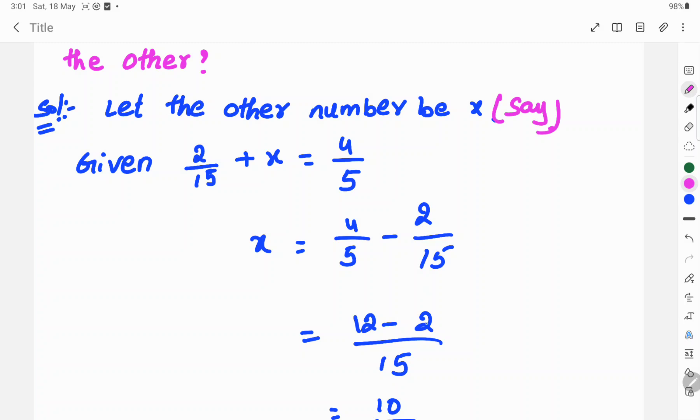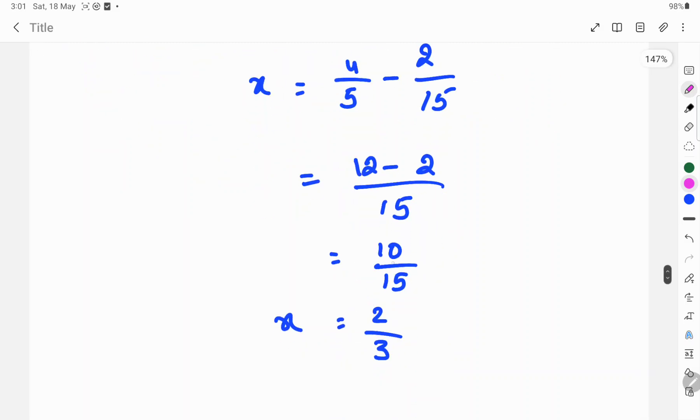1 into 2 is 2. So 12 minus 2 is 10 by 15.